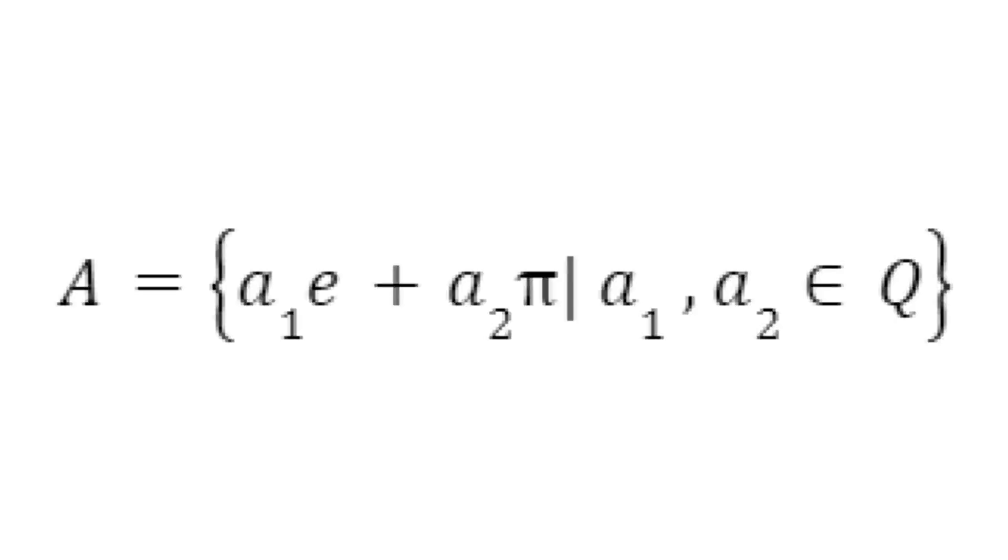So for our space A, definitionally all elements could be written as a linear combination of pi and e. But is it a unique combination?